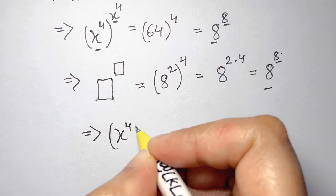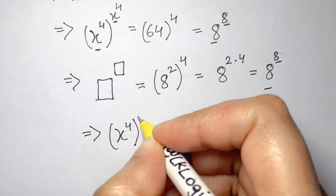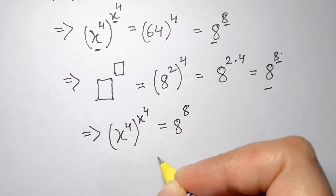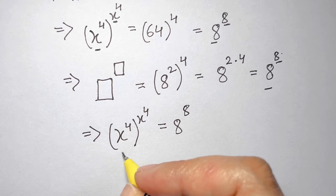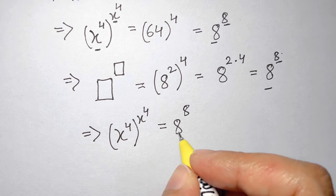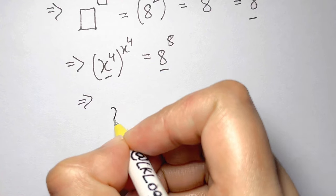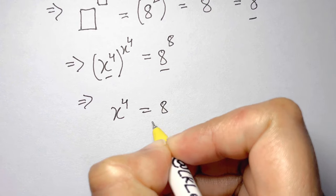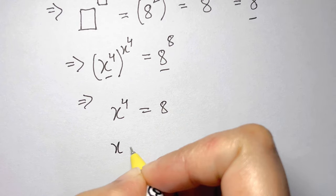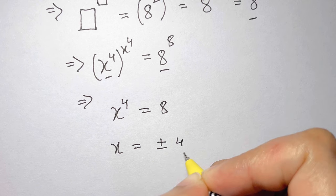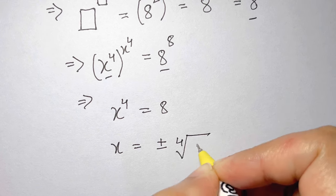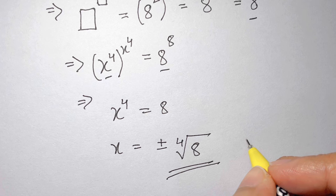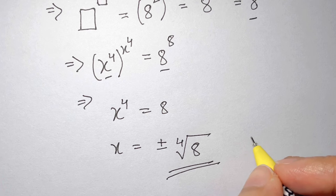So we have x to the power of 4, whole to the power of x to the power of 4, equals 8 to the power of 8. Now we can compare either the bases or the powers. Thus, x to the power of 4 equals 8, and x equals plus or minus the fourth root of 8. Thanks for watching, bye-bye, take care and have fun!